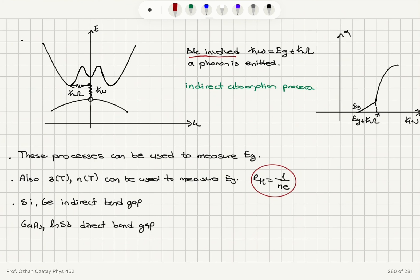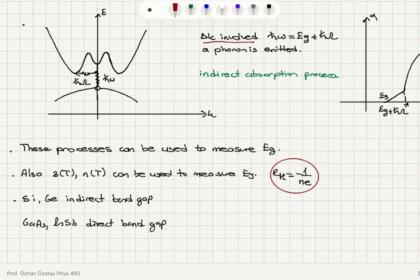In indirect absorption, the marked increase in the absorption coefficient occurs when the incoming photon energy equals the band gap plus the energy of the emitted phonon. These processes are used to measure the band gap. The marked increase in conductivity and electron concentration when the system energy reaches the band gap value tells us about the band gap. One way to measure carrier concentration is by the Hall coefficient, which is -1/(ne) for metals, but for semiconductors this must be modified to consider contributions from both electrons and holes. Silicon and germanium are indirect band gap semiconductors; gallium arsenide and indium antimonide are examples of direct band gap semiconductors.